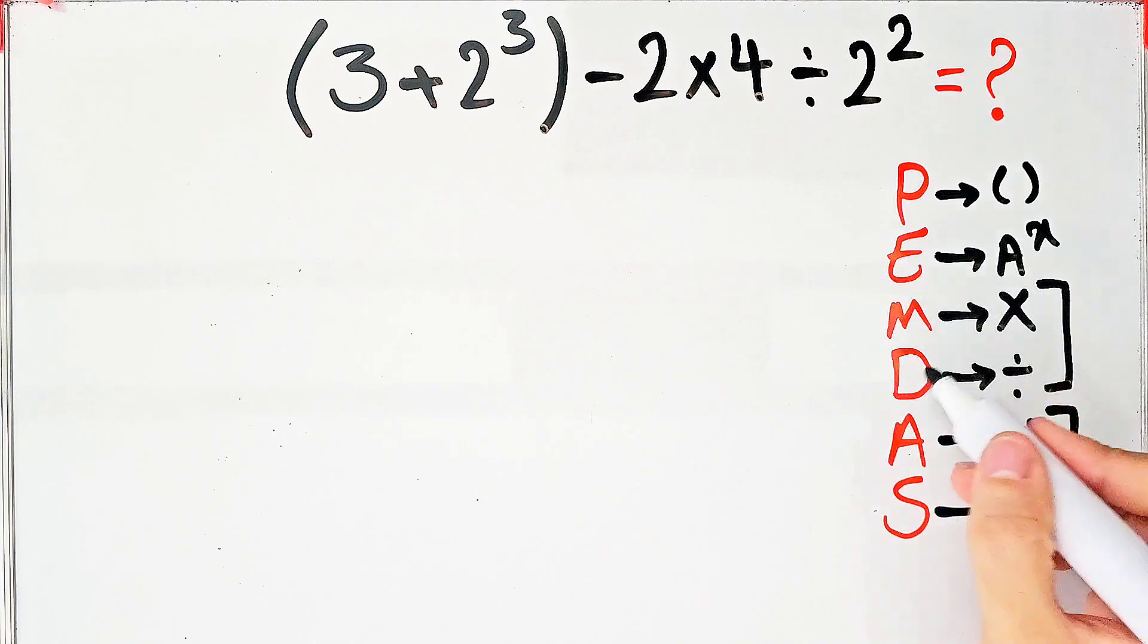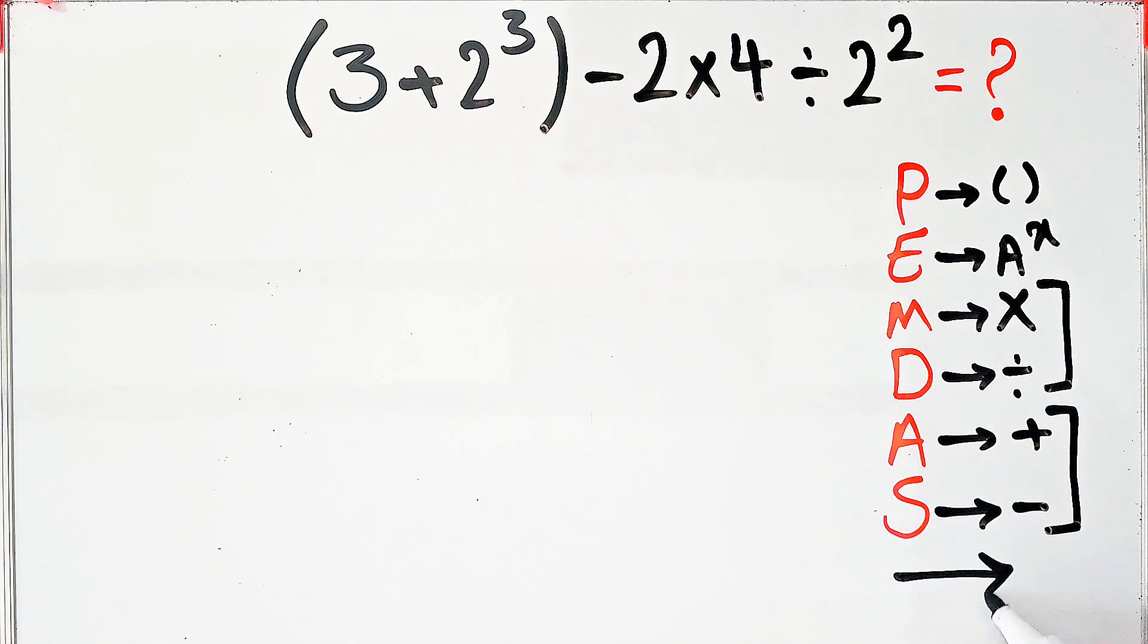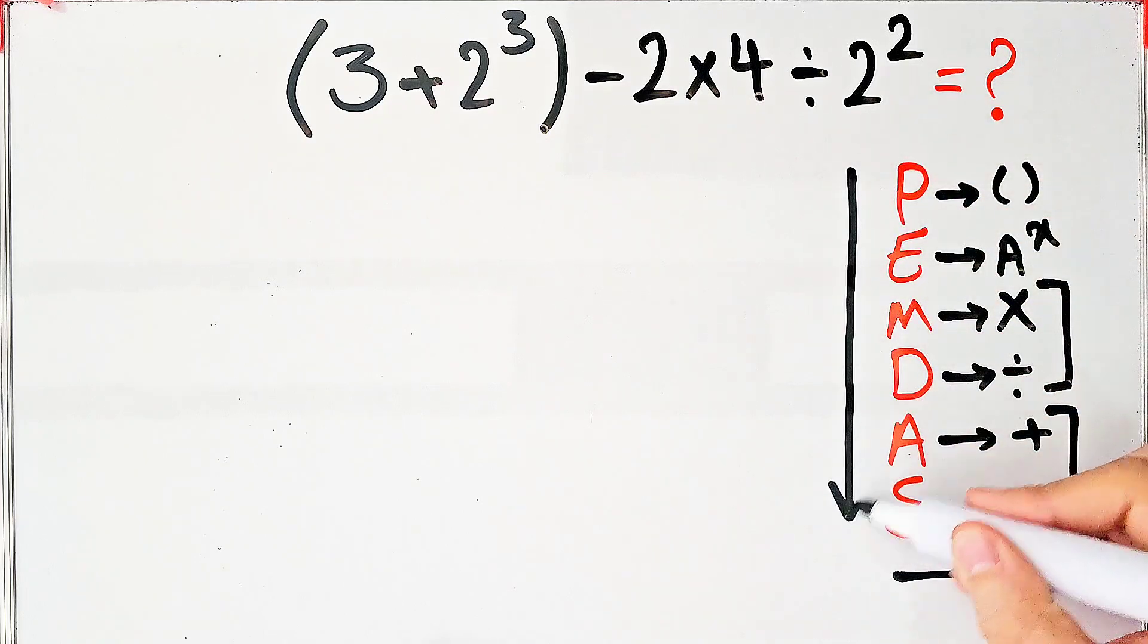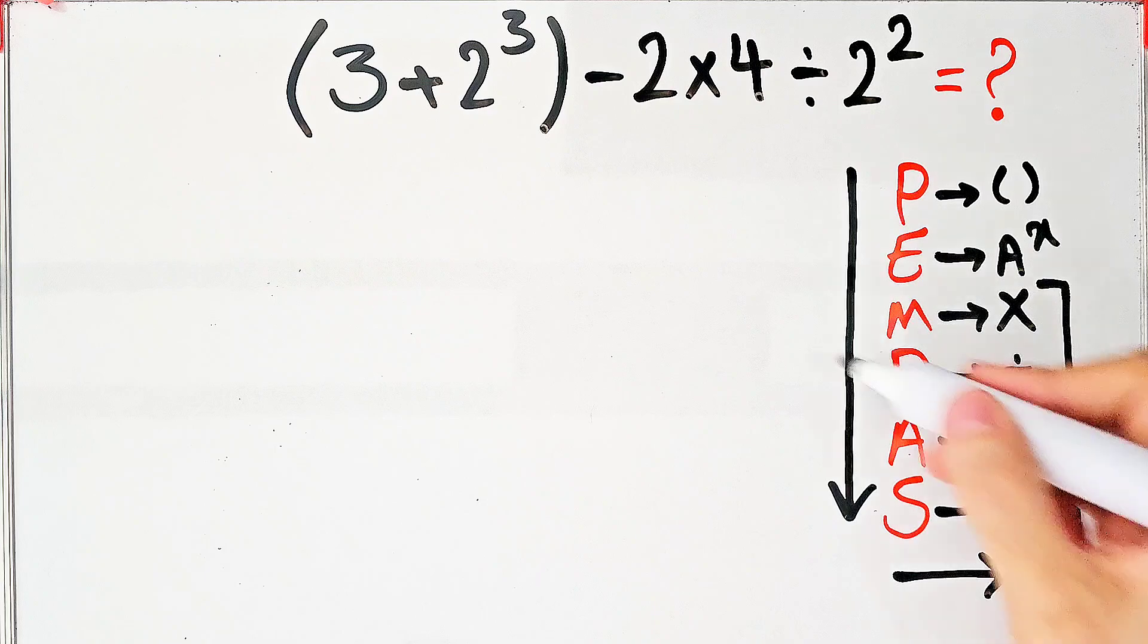When we have both in an expression, we start from the left and simplify. We have to follow this rule from top to bottom. According to the PEMDAS rule, first we simplify the parentheses.